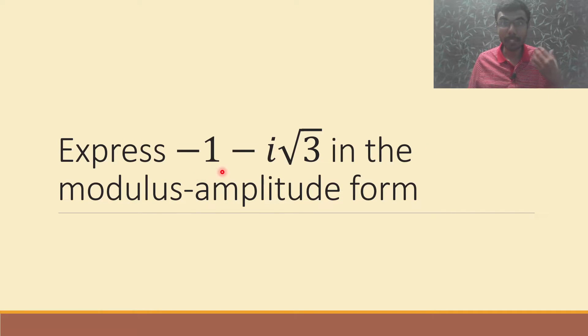Hello learners, now let us see how to express -1 - i√3 in modulus amplitude form or polar form. What is this polar form? Polar form is nothing but r·(cos θ + i sin θ).